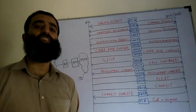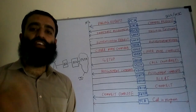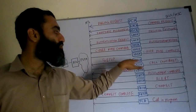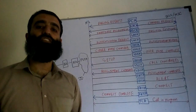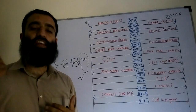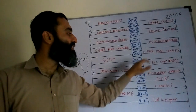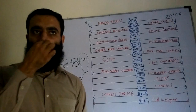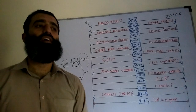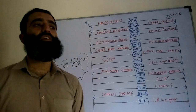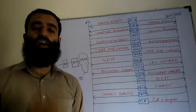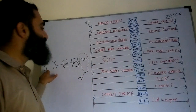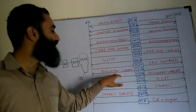After authentication and ciphering are complete, the next step is the setup of the call. The network sends a setup message using the same SDCCH channel to the mobile station that everything is okay and we can proceed with the call setup. The mobile station then confirms the setup of this call in the uplink with a call confirmed message. Since voice or data calls are set up on the TCH channels, the network now assigns a TCH channel to the mobile station in both the uplink and downlink using the assignment command.